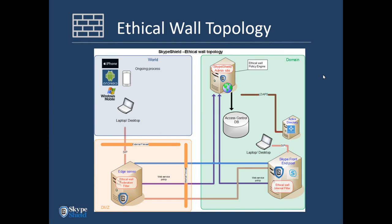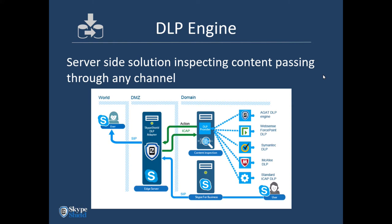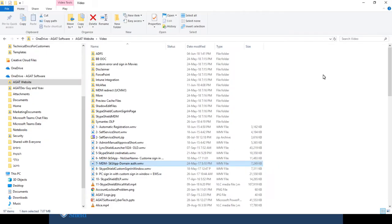The topology for the ethical wall is based mainly on the SIP filter. If a customer only needs the ethical wall, they simply install the website and the SIP filter on the Edge or sometimes on the Front End — a simpler deployment without needing a reverse proxy. The next item is DLP, an engine addressing data leak prevention with server-side inspection capability. We can either send traffic to an external DLP vendor or inspect it using our own engine.